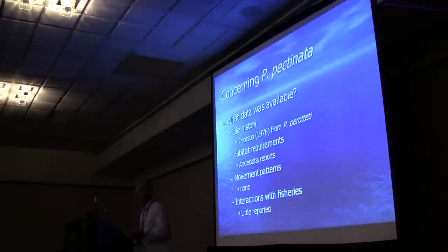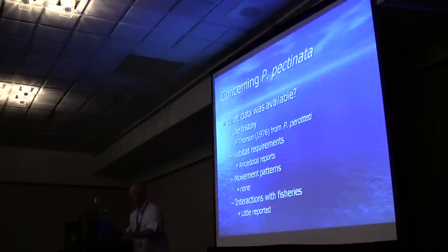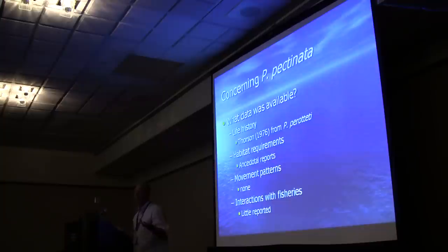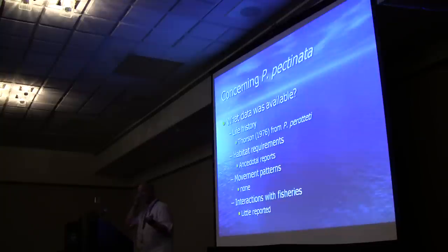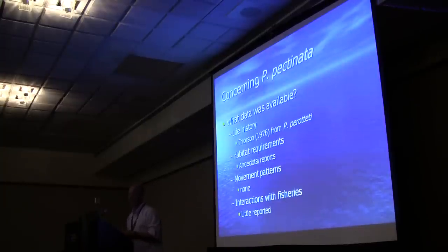Getting back to the US population — Pristis pectinata — when it was listed on the US Endangered Species Act, we had to go through a process of recovering the animal. We asked what data we had available, and we didn't have much. The life history information we actually had was from another species done in the 1970s. There were anecdotal reports about habitat, no real information about movement, and very little reported information about interactions with fisheries.